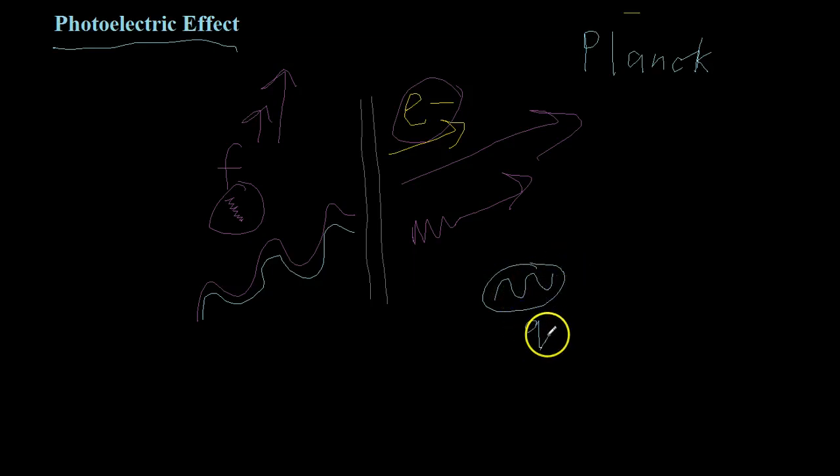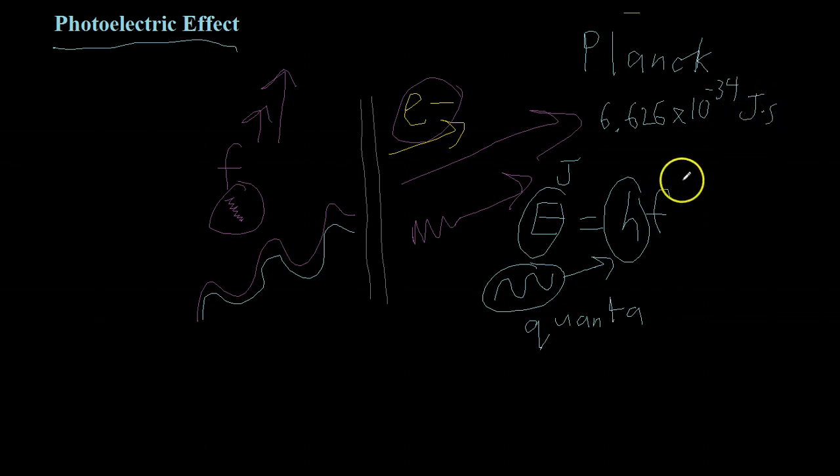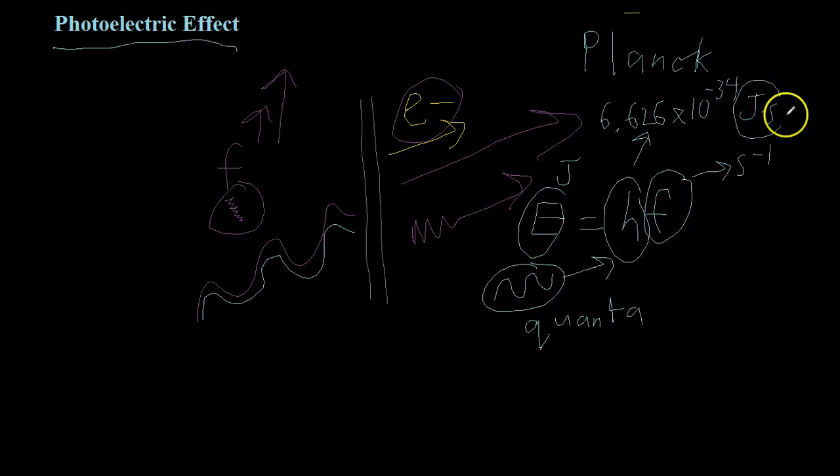He called these packets quanta. Planck was able to relate the energy of these quanta to their frequency by the equation E equals HF, where E is the energy in joules, H is Planck's constant, 6.626 times 10 to the negative 34 joule seconds, and frequency is seconds to the negative 1. It's important to use the units on Planck's constant because you need the S to cancel out, and then you're left with the joules to give you the energy.